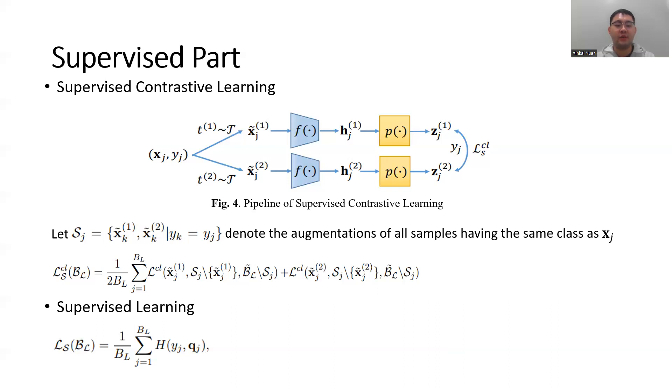In addition to the supervised contrastive learning loss, a cross-entropy loss is also included in this part for each labeled input pair (xj, yj).